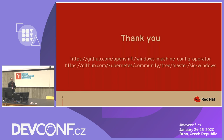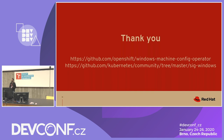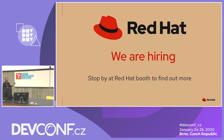Here are a couple of links: one for our repo, the Windows Machine Config Operator. It will soon be renamed to Windows Machine Config Bootstrapper, and we'll start afresh when we go down the operator model path. SIG Windows is the special interest group in Kubernetes for upstream work — if you're interested in contributing, please join SIG Windows on the Kubernetes Slack. They also have weekly meetings. And a plug for Red Hat: we are hiring all over the world, and in particular the Windows Container team is hiring in Boston.